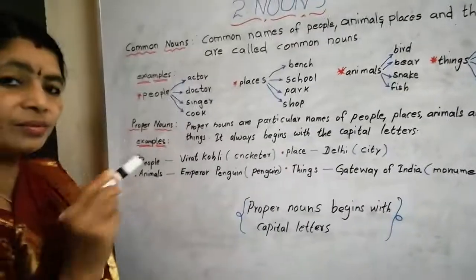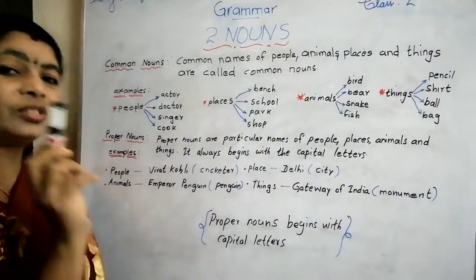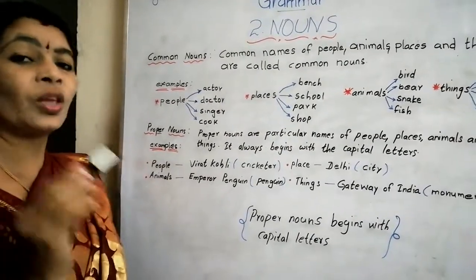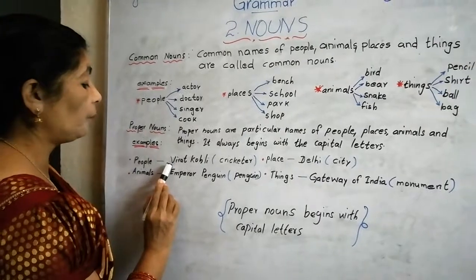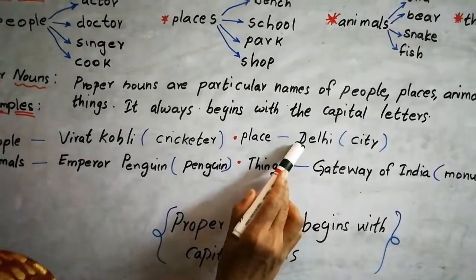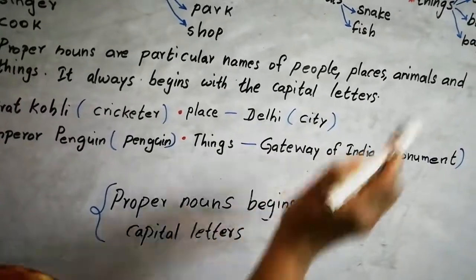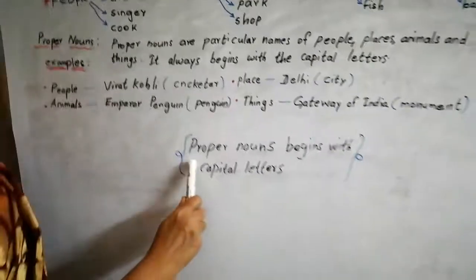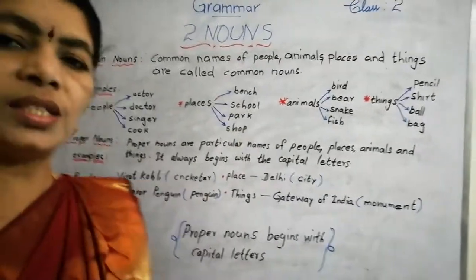Do you see the difference between common noun and proper noun? In proper nouns we use capital letters because they have a specific or particular name given. See here: V in Virat — capital; K in Kohli — capital; D in Delhi — capital; E in Emperor — capital; P in Penguin — capital; G in Gateway — capital; I in India — capital. The main thing to remember in this lesson: proper nouns begin with capital letters.